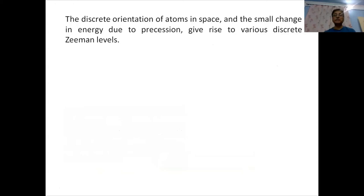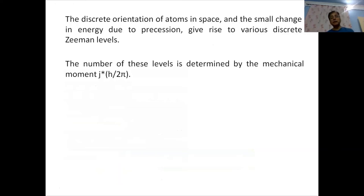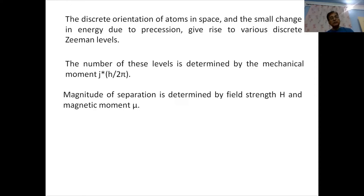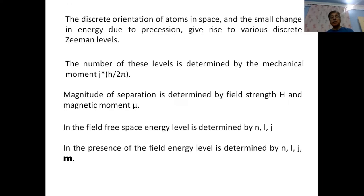The discrete orientation of atoms in space, and the small change in energy due to precession, give rise to various discrete Zeeman levels. The number of these levels is determined by the mechanical momentum J* h/2π. The separation between these levels is determined by the field strength H and magnetic moment μ. In field-free space, the energy level is determined by n, l, j; in the presence of a field, the energy level is determined by n, l, j, m.